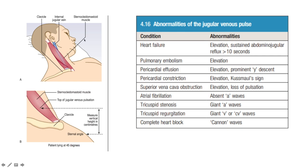The internal jugular lies just immediately medial to the sternocleidomastoid. We check the top of the jugular venous pulsation in vertical height from the sternal angle — anything above three centimeters means it's elevated. JVP is elevated in heart failure, and with sustained abdominal jugular reflux above 10 seconds. Pulmonary embolus will raise it. Pericardial effusion and pericardial constriction also raise JVP — in pericardial constriction you have Kussmaul's sign: the JVP increases on inspiration rather than falling. Superior vena cava obstruction gives elevation with loss of pulsation — non-pulsatile elevation. In atrial fibrillation there are absent A waves because there is no coordinated atrial contraction.